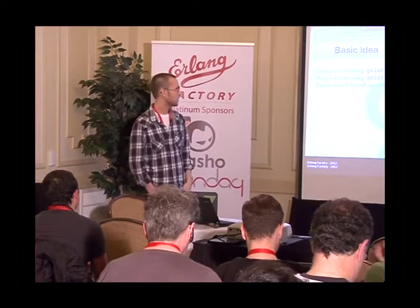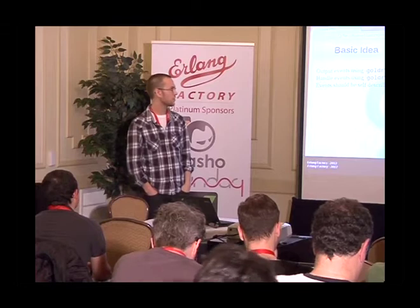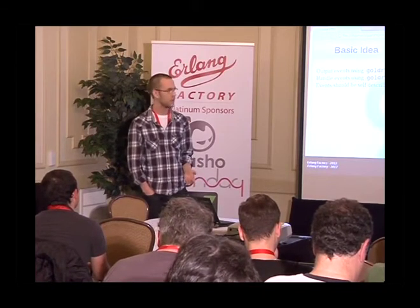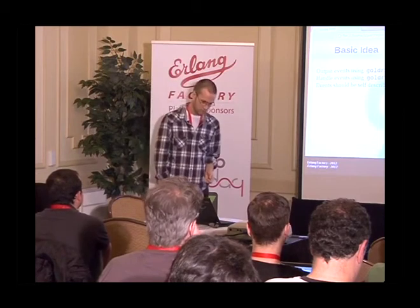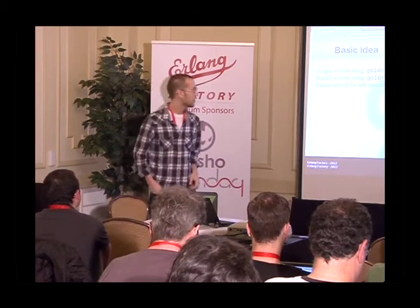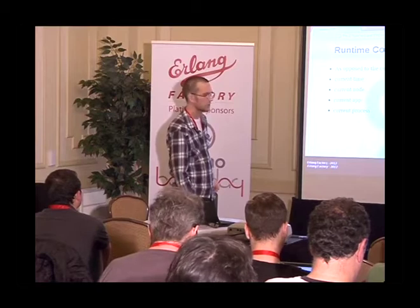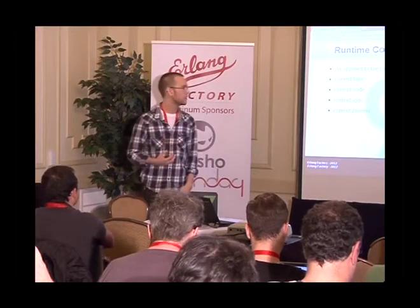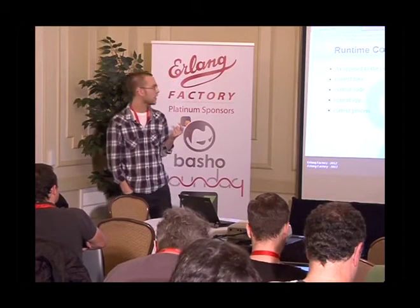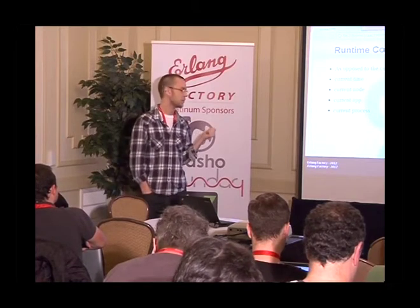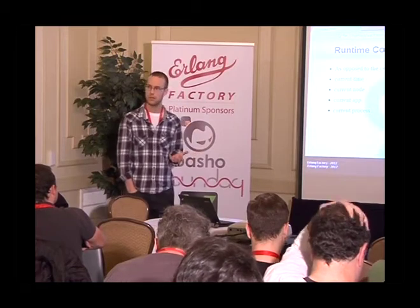The idea is that events should be self-describing — you shouldn't have to add as much information to them. If we know that an event was emitted from a process in a specific application, you shouldn't have to declare that. We basically have three components for each event: the current time, the current node, the current application, and the current process — so four things — which makes it easier to correlate with other things that happen.